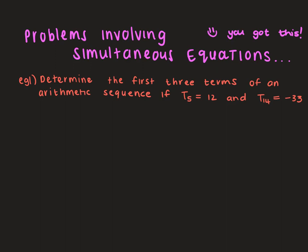What you can imagine happening here is you'll have term 1, term 2, term 3, term 4, and we get to term 5. We know that the value of term 5 is 12. Then I've got to keep going — term 6, and so on — until we get to term 13. And they say that term 14 is negative 33. The pattern keeps going.